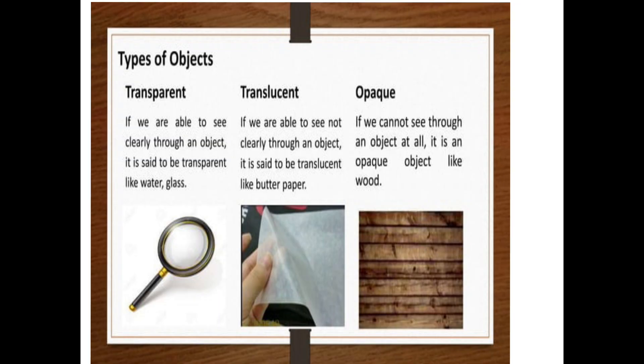Opaque object. If we cannot see through an object, it means we cannot see at all. It is an opaque object, like wood.